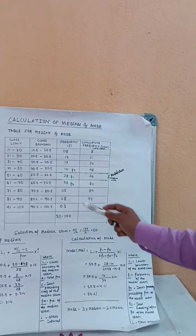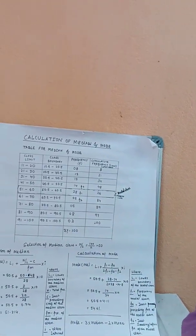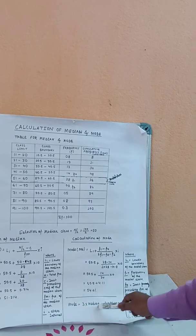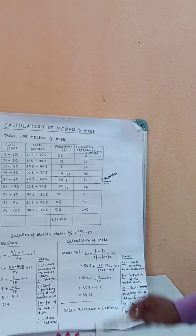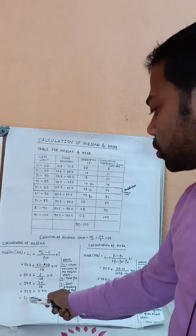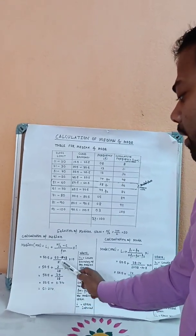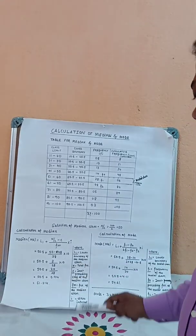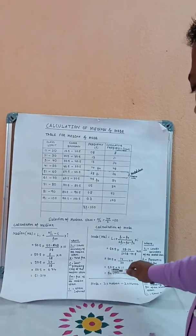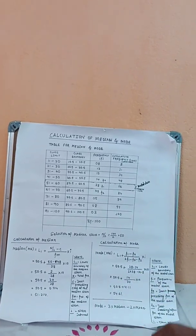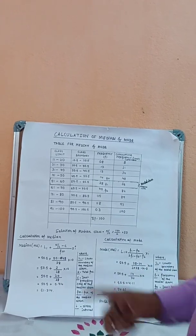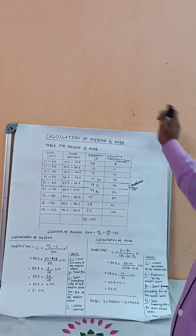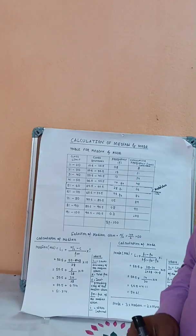We write the mode formula separately. But if you have already calculated the median and mean, then the mode can also be found using the alternative formula: Mode = 3 × Median − 2 × Mean.